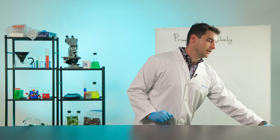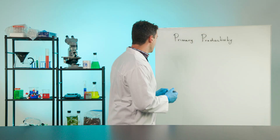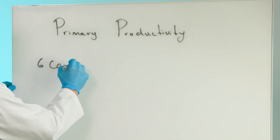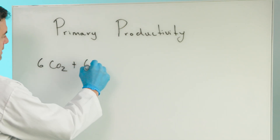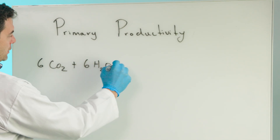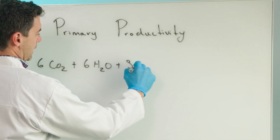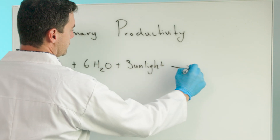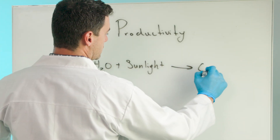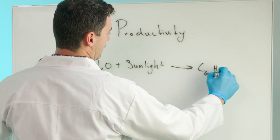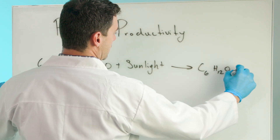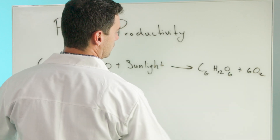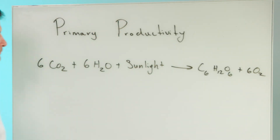As a quick refresher on photosynthesis: you start with six carbon dioxide, add six waters, include a little sunlight, and that yields glucose (C6H12O6) and some oxygen. That's photosynthesis.